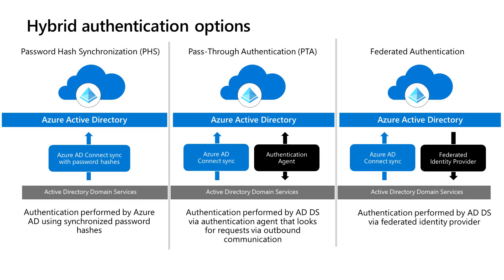There are really three methods of authenticating. The first is password hash sync, where we're syncing a hash of the hash of the password and authenticating against that hash up in the cloud. Pass-through authentication passes the auth through Azure Active Directory down to Windows Server Active Directory to provide authentication. And federated authentication uses the user object in Azure Active Directory but actually authenticates through ADFS — Active Directory Federation Services — on-premises.